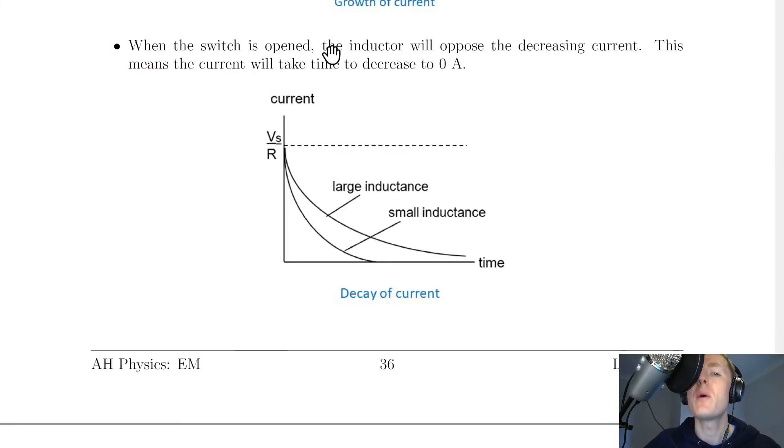When the switch is opened, however, the opposite will happen, and the inductor will oppose the decreasing current, i.e. the inductor wants to try and stop the current from going down. This means the current will take time to decrease to zero amps. So again we can plot this on a current against time graph, and show the maximum current Vs over R, decreasing down to zero over time.